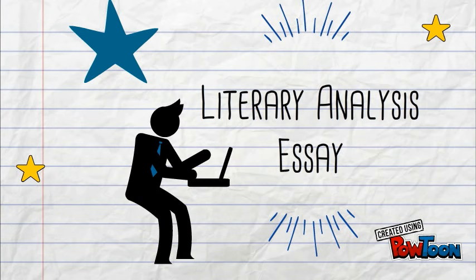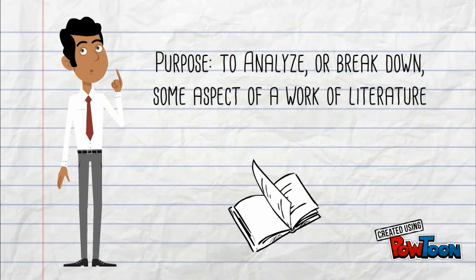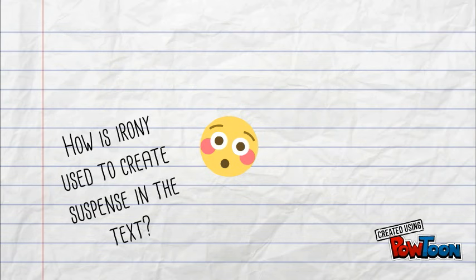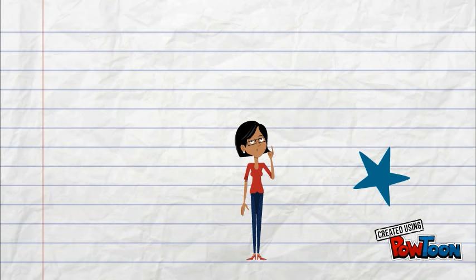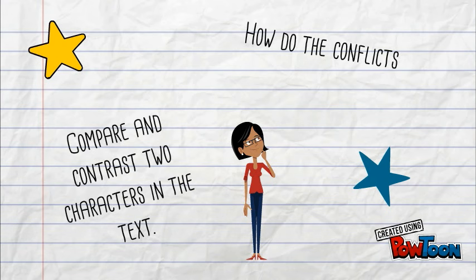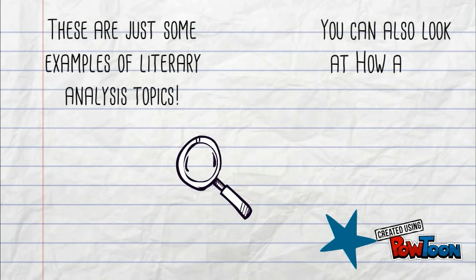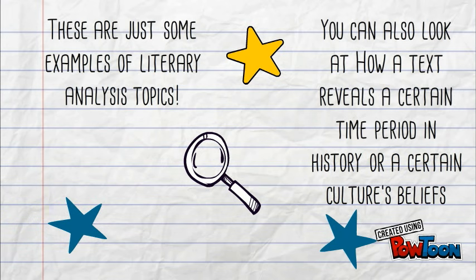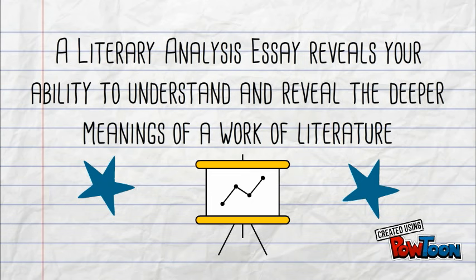Let's break down the literary analysis essay. The purpose of the literary analysis essay is to analyze or break down some aspect of a work of literature. You might ask yourself something like: how is irony used to create suspense in the text? Or how does figurative language create the mood of the text? You might also compare and contrast two characters, or examine how conflicts in the text reveal the theme. You can also look at how a text reveals a certain time period in history or a certain culture's beliefs. A literary analysis essay reveals your ability to understand and reveal the deeper meanings of a work of literature.